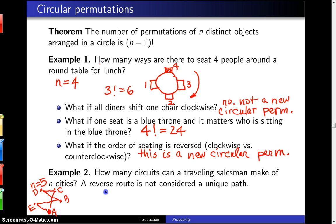And there are N minus 1 factorial different routes that you could take. Now, this is not the answer because of this last statement right here, which says a reverse route is not considered a unique path.